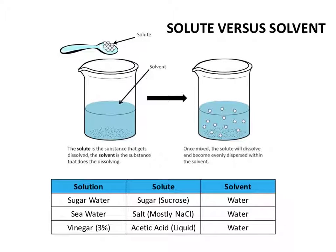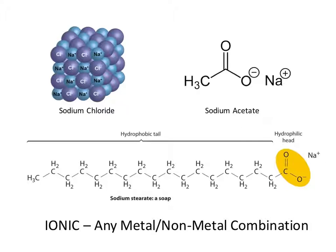Now let's look at how we classify materials based on bonding characteristics, because this becomes important when we talk about solubility. An ionic material is any metal-nonmetal combination. The standard example is sodium chloride: sodium cation and chloride anion forming a lattice. Sodium chloride is hard and brittle at room temperature, melts and boils at high temperatures, and has very poor conductivity in the solid state.